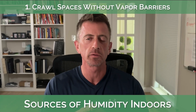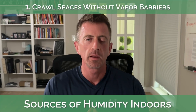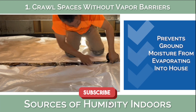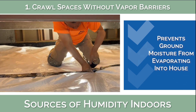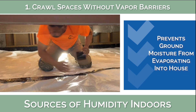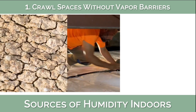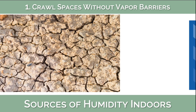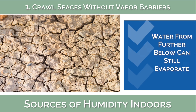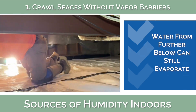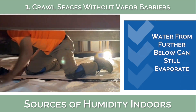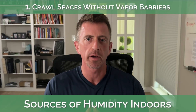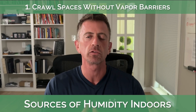Let's discuss number one: crawl spaces and cellars without vapor barriers. There is almost always some amount of moisture under the ground, and the purpose of a vapor barrier is to prevent that ground moisture from evaporating up into the house. Even if the ground in your crawl space looks dry to you, it can be deceiving and it's still likely allowing moisture from further below to evaporate into your house. So properly installing a good vapor barrier is essential to controlling moisture.